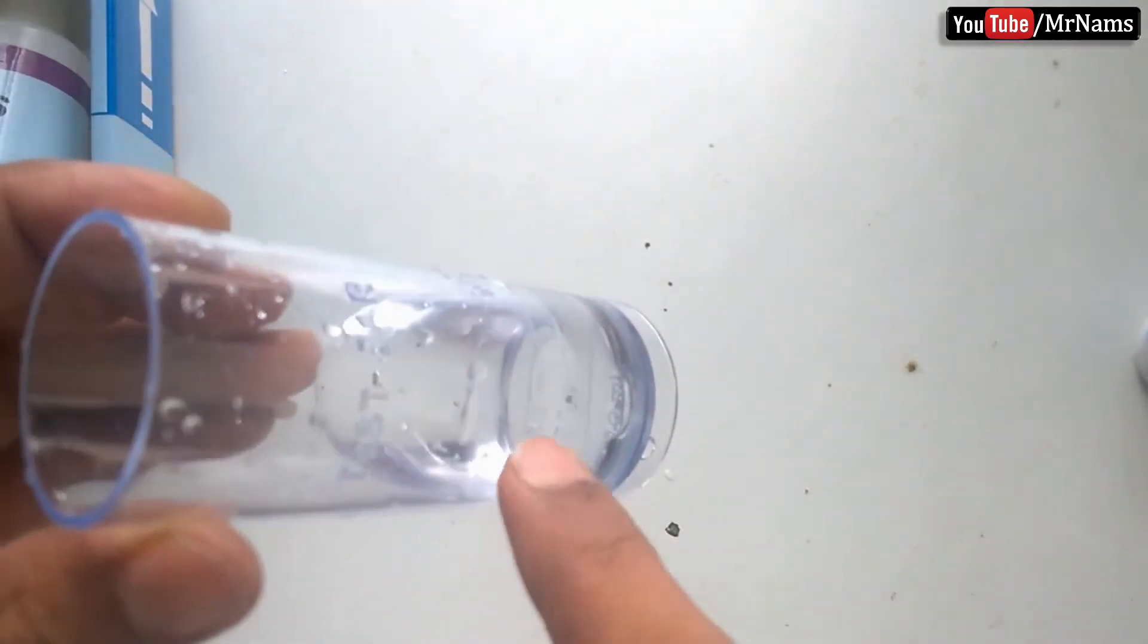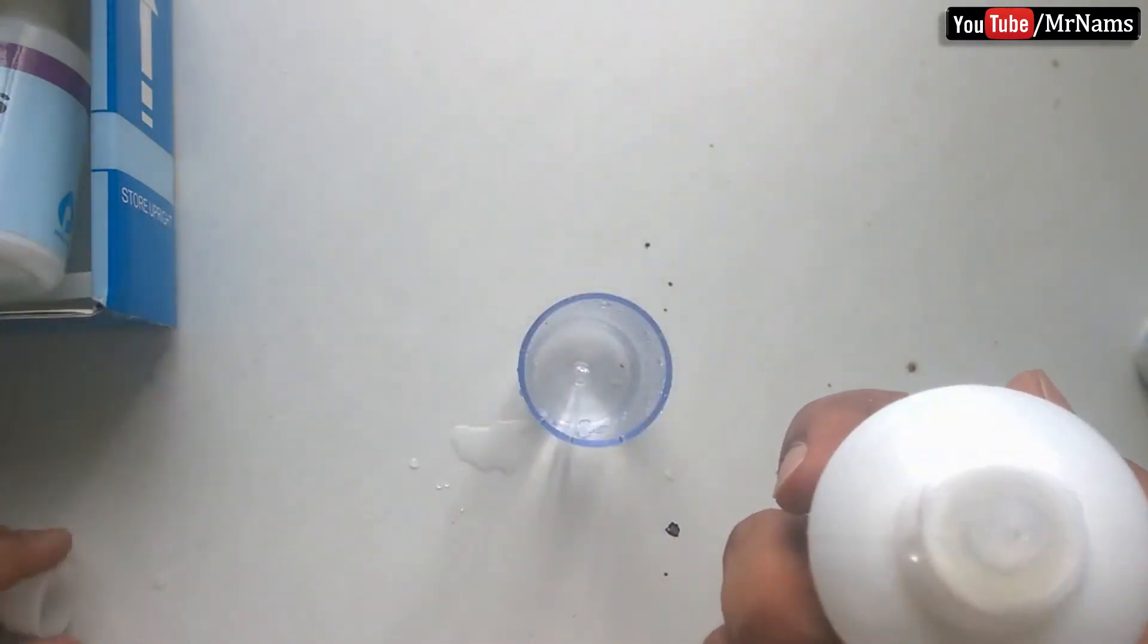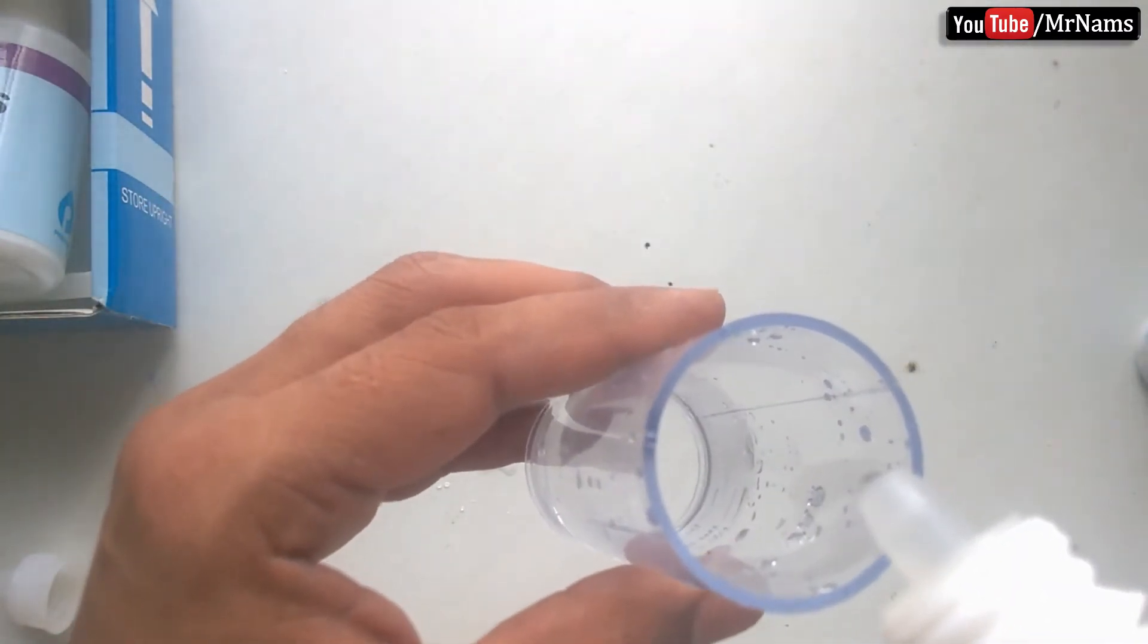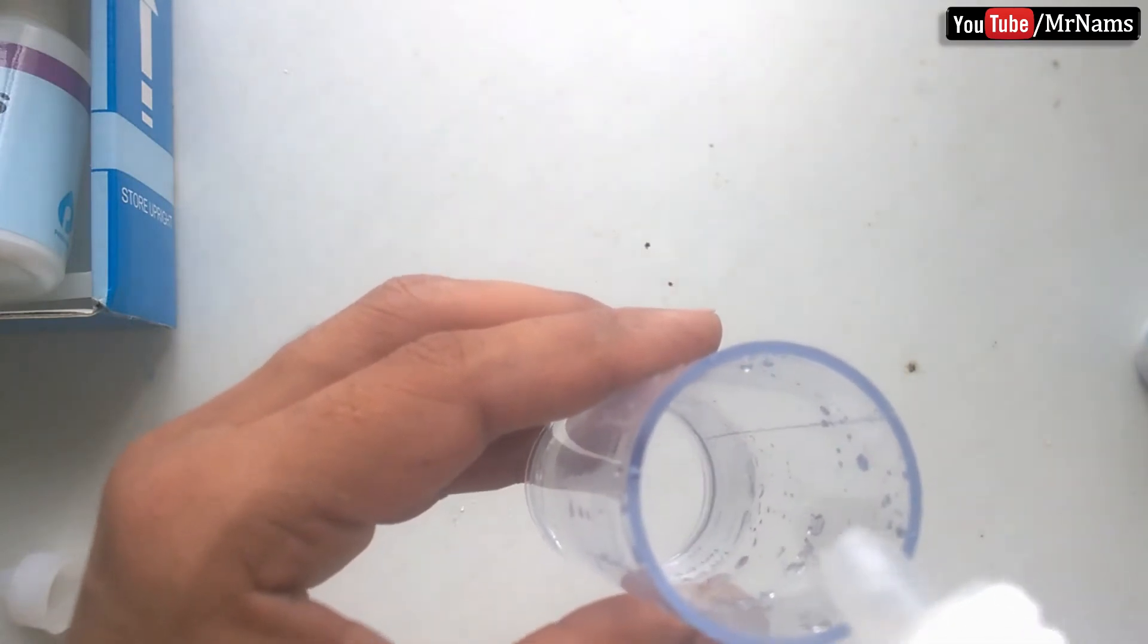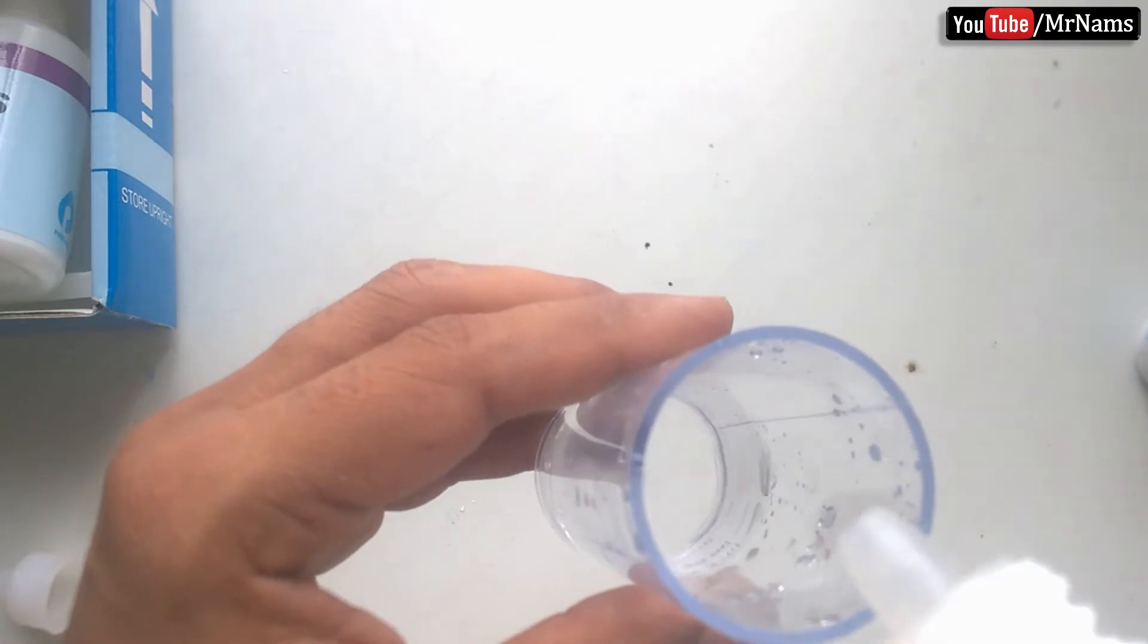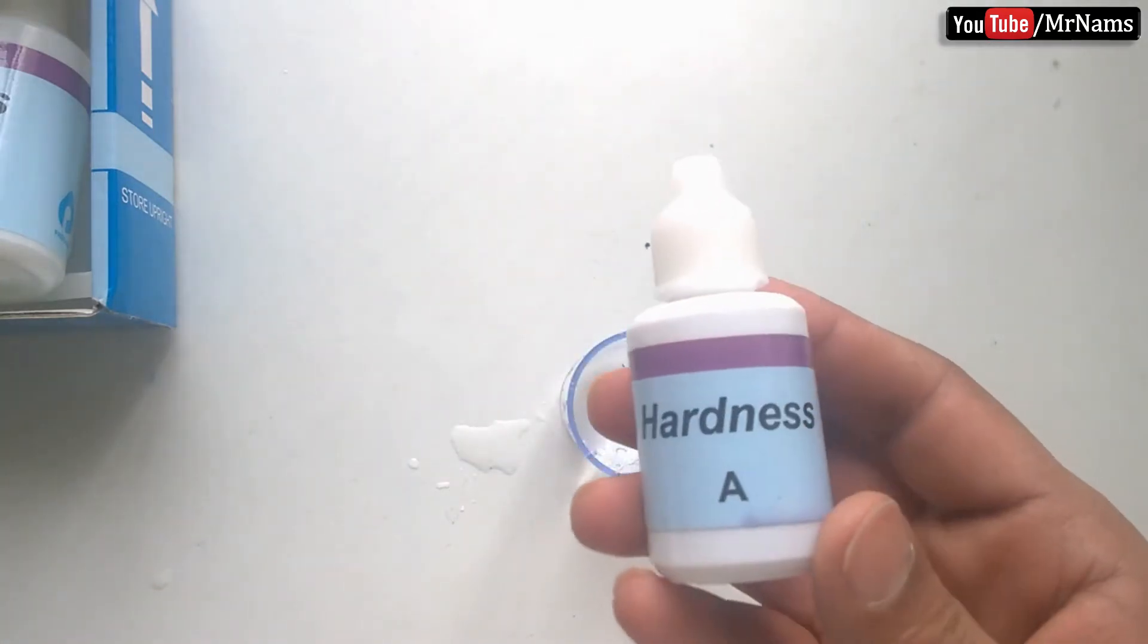Take 25 ml water in test jar. Add 10 drops of reagent B. Add few specks of reagent A powder.